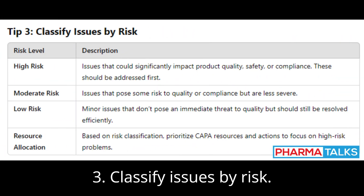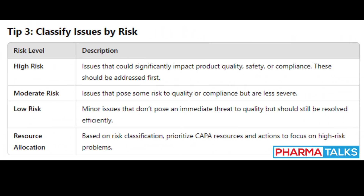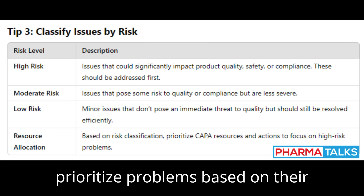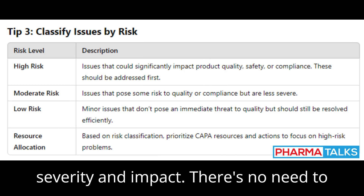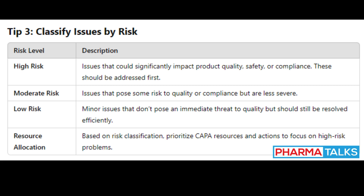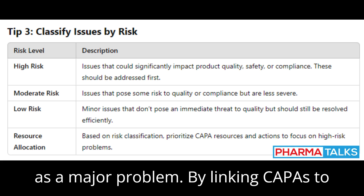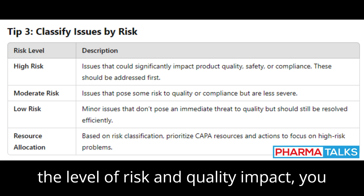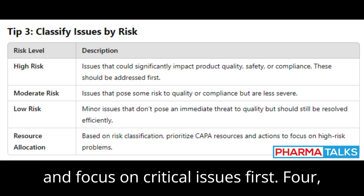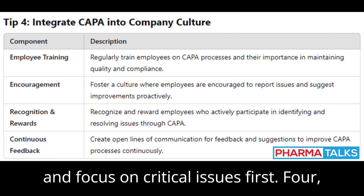Tip 3: Classify Issues by Risk. Your CAPA management system should prioritize problems based on their severity and impact. There's no need to treat a minor issue with the same urgency as a major problem. By linking CAPAs to the level of risk and quality impact, you can allocate resources more effectively and focus on critical issues first.